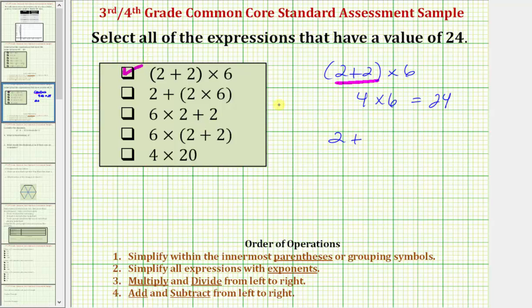For the next expression, again, the first step is to simplify inside the parenthesis. So we simplify two times six first. Two times six is equal to 12. So this expression simplifies to two plus 12, which equals 14, which is not 24. So we don't check this box.